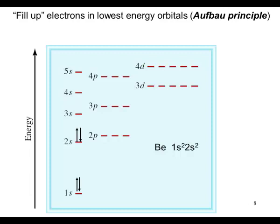Boron, 5 electrons, must go in the 2p. 1s2, 2s2, 2p1. Notice that the p orbitals can hold a maximum of six electrons.